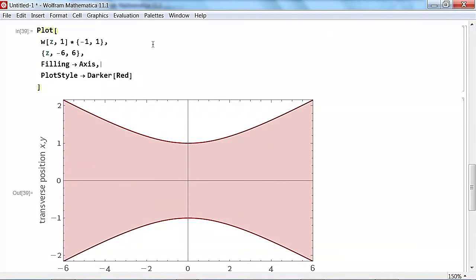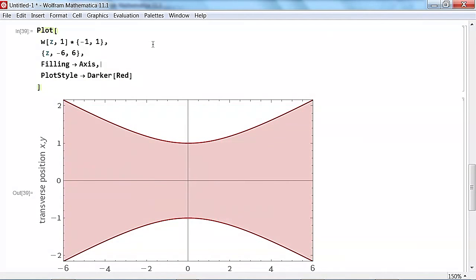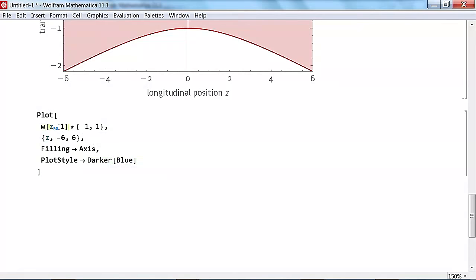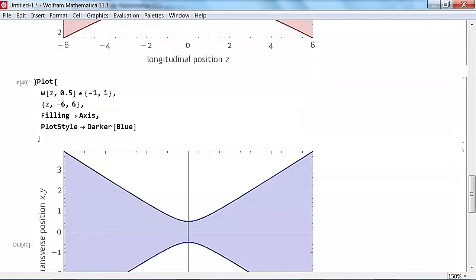But equations have dials. The parameters of this equation should be considered as knobs we can turn. Let's do one of those by turning the dial of the minimum spot size. So we've got a laser that has that property. Let's do another one that has half the spot size at the origin. We want to see the effect of squeezing light down and what happens when it propagates.